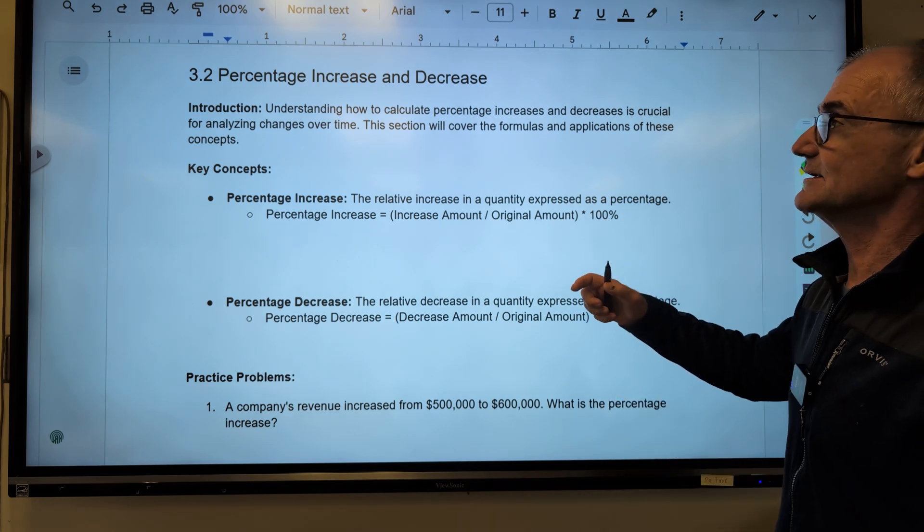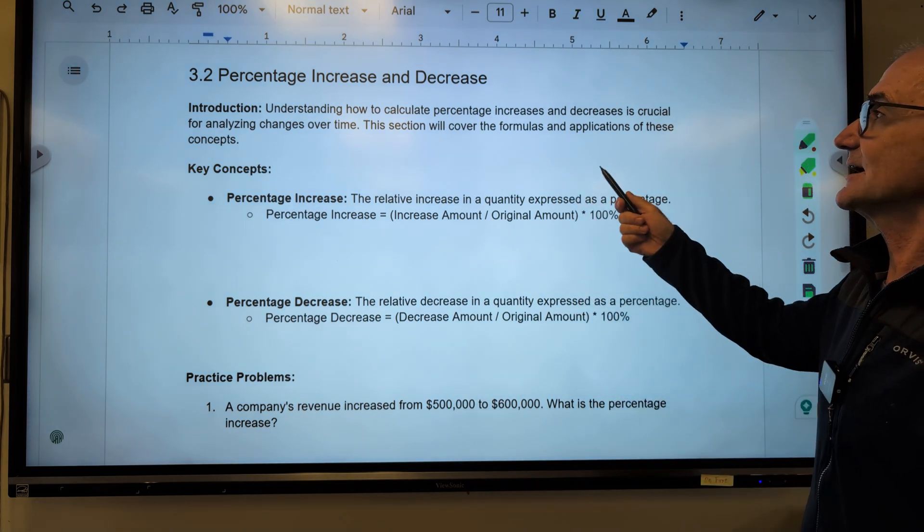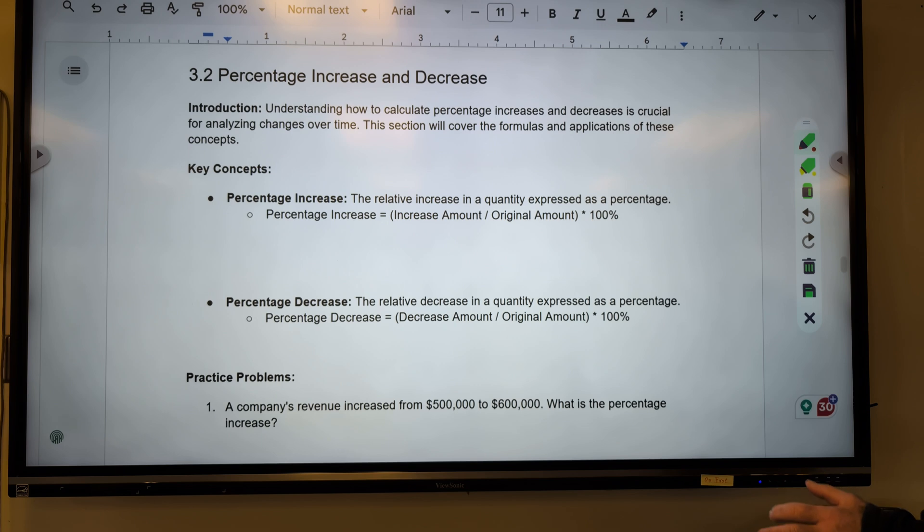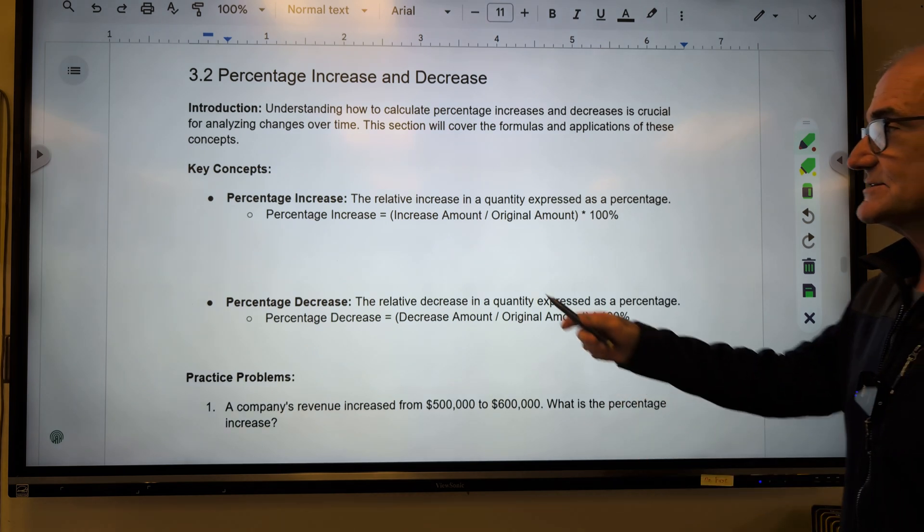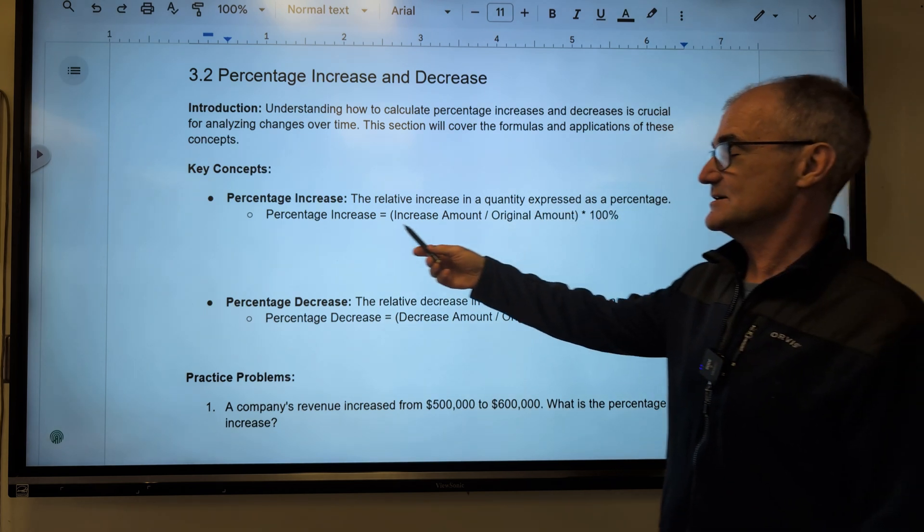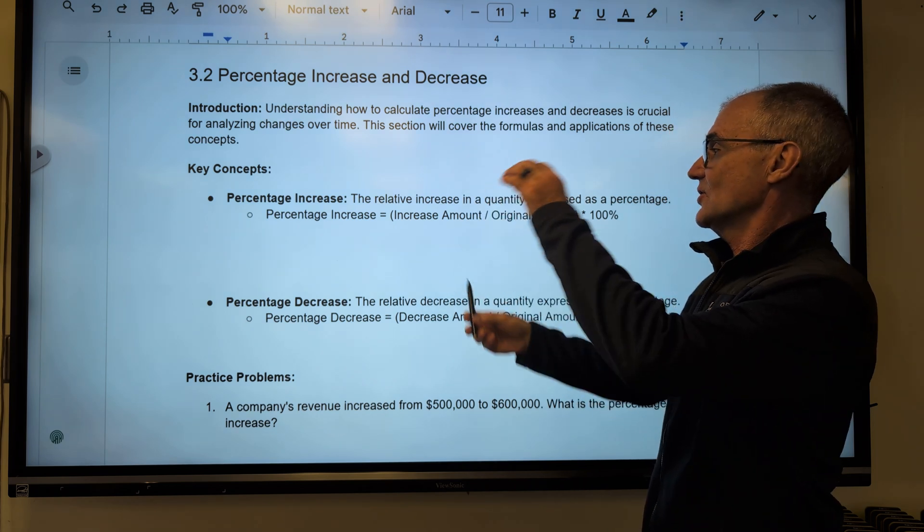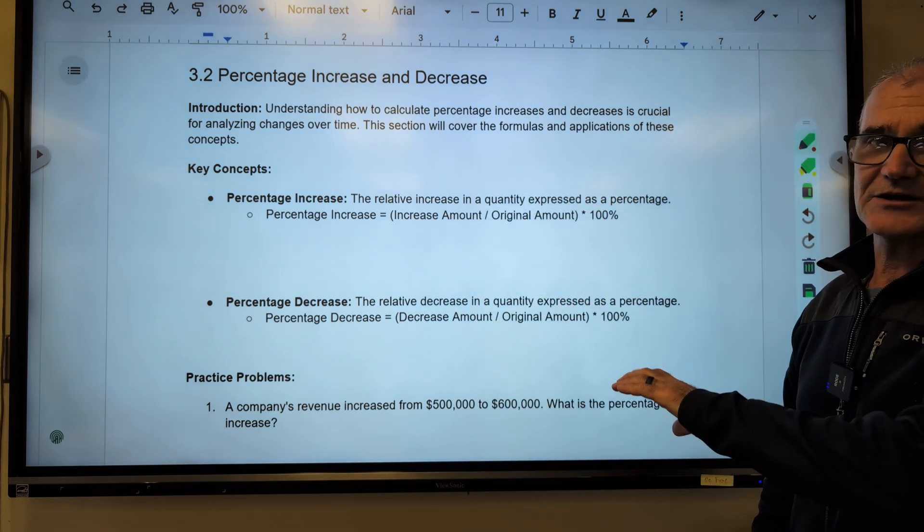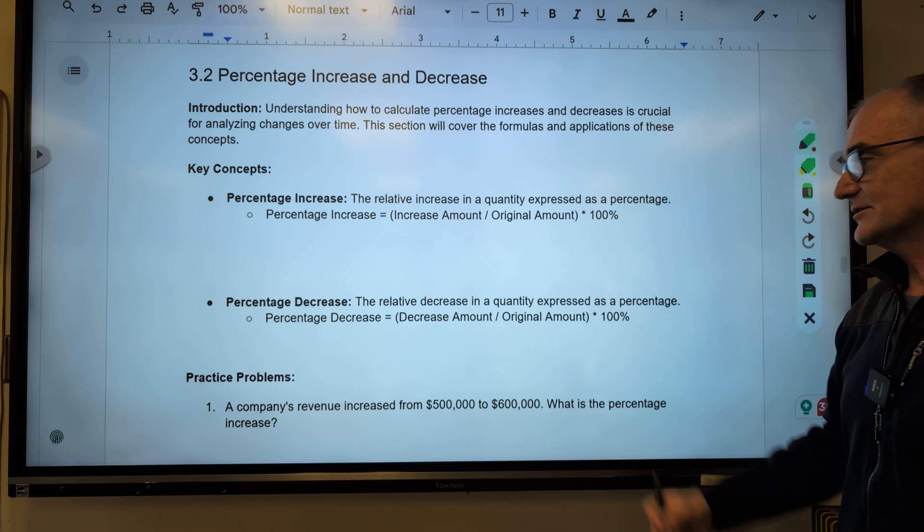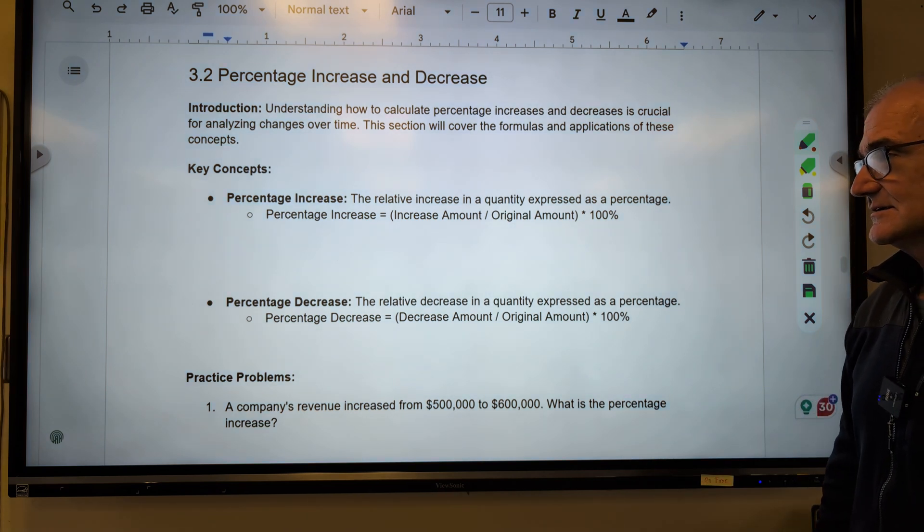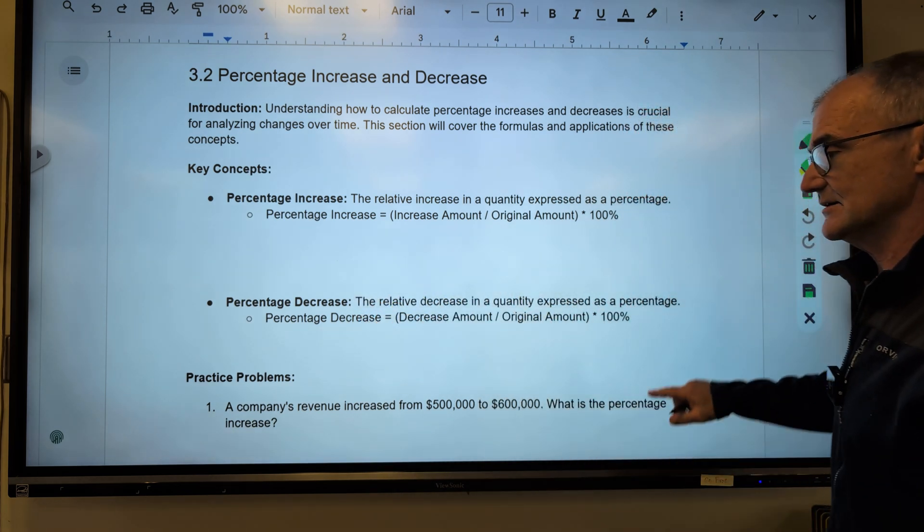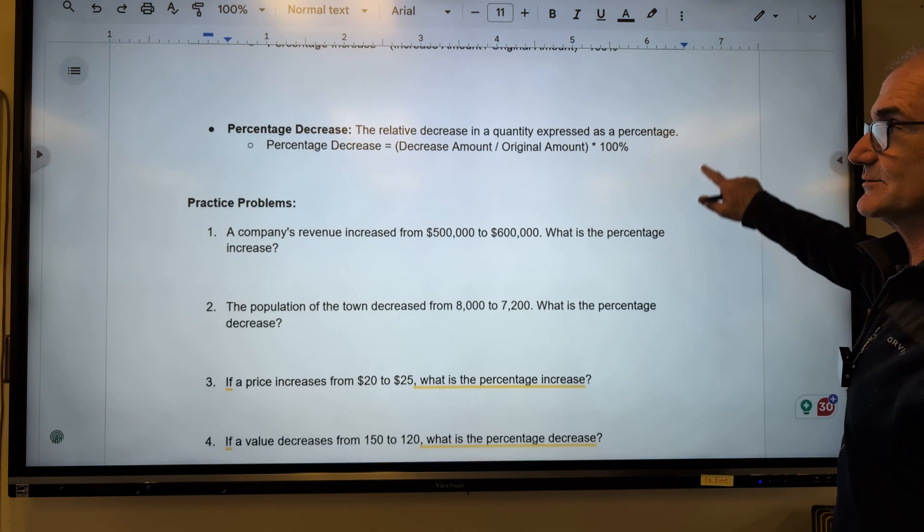Okay, section 3.2, the next little section in chapter 3. Percentage increase and decrease. Understanding how to calculate percent increase and decrease is really important for looking at changes over time. Section covers the formula and applications. A percentage increase is a relative increase in a quantity expressed as a percentage. So a percentage increase is going to be that increased amount over the original amount times 100% to make it a percent. Percent decrease is a decrease amount over the original amount times 100%. So if we're looking for percent increase or percent decrease, it is the amount over the original amount. Let's go ahead and do a couple sample problems here.